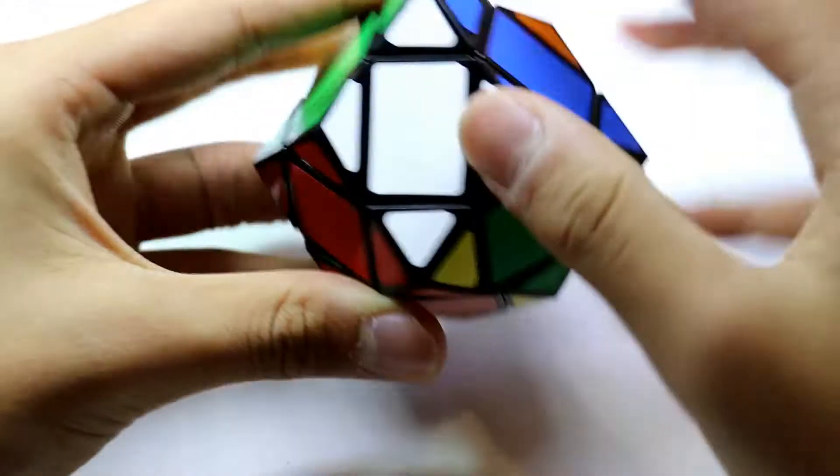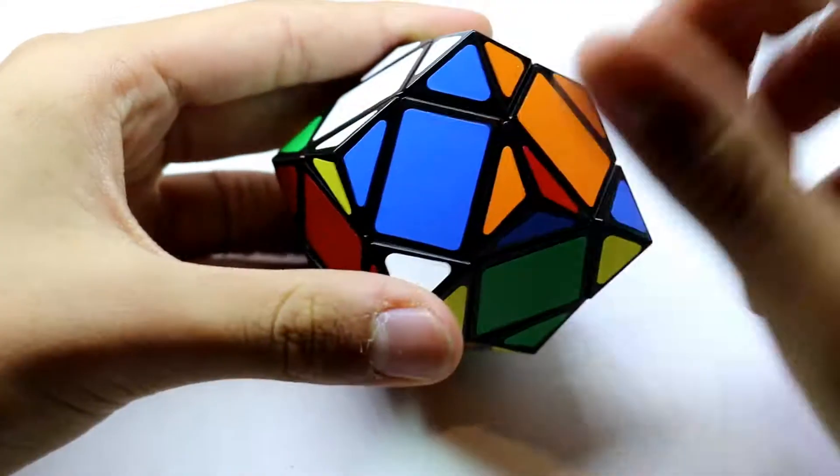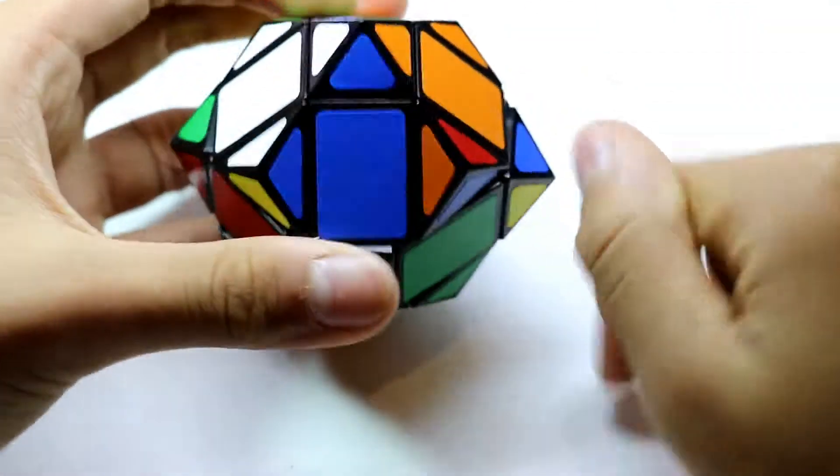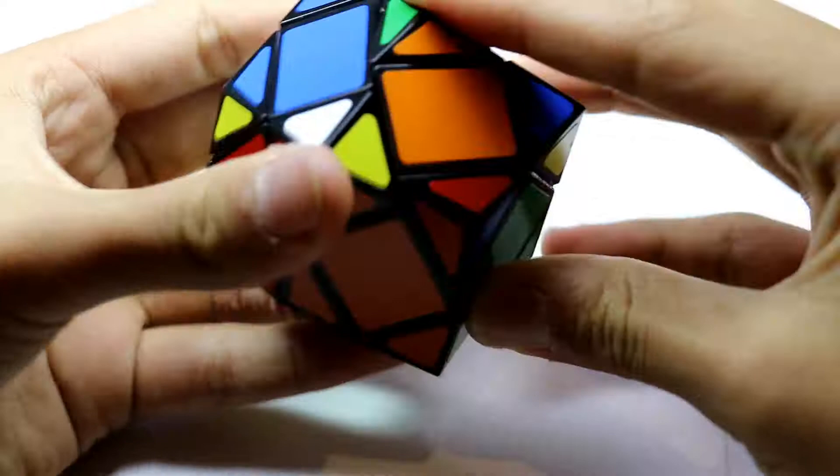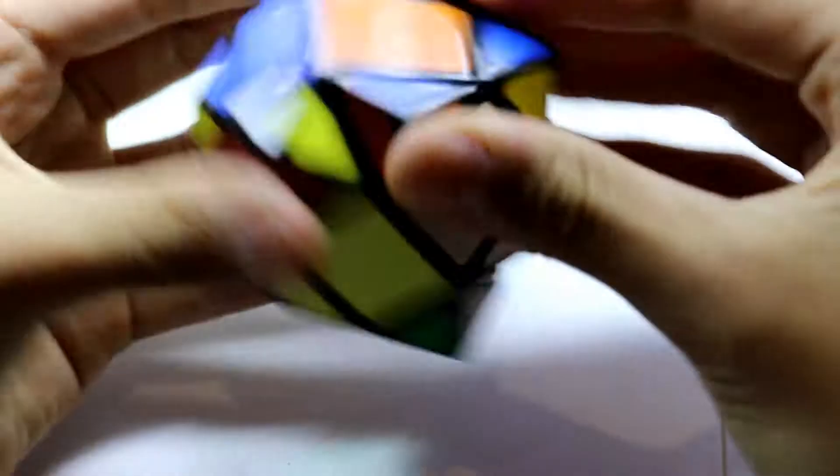So now that the one that is solved, move this side so that the one that is not solved is on your right bottom. And do this again, R prime, D prime, R, D, R prime, D prime, R, D, R prime, D prime, R, D.